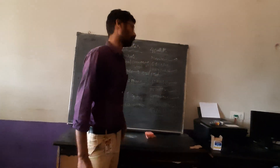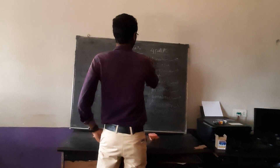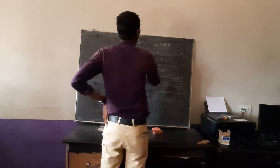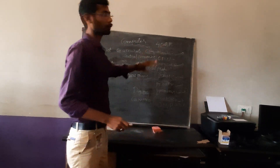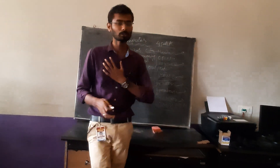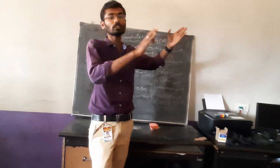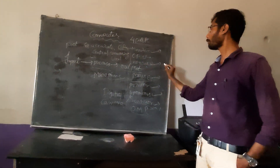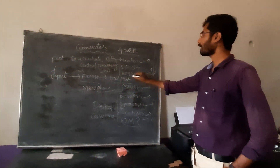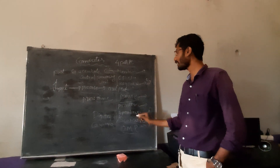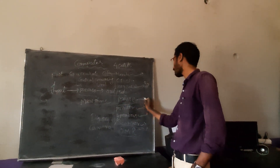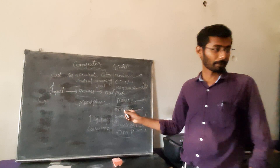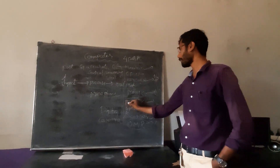This is the input and output classification. Monitor is an output device — it is not an input device. Keyboard is an input device — it is used to import data into the computer. Mouse is also an input device. Printer is an output device — it is output.